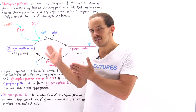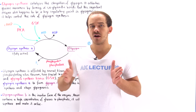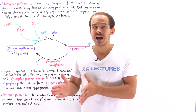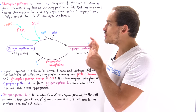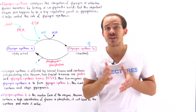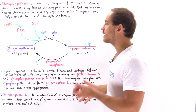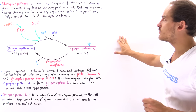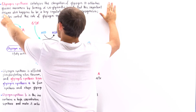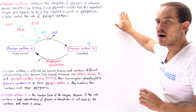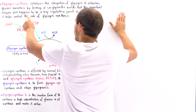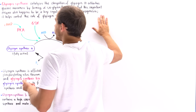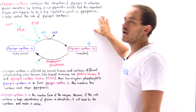Glycogen synthase is not only used to build up the glycogen chain — it also controls the rate at which glycogen synthesis takes place. We can turn off glycogen synthase, which in turn turns off glycogenesis. So glycogen synthase catalyzes the elongation of glycogen by forming alpha-1,4 glycosidic bonds, and it is also a key regulatory protein in building the glycogen molecule.